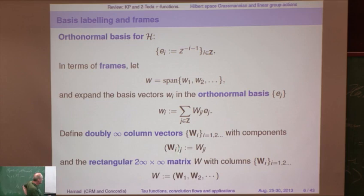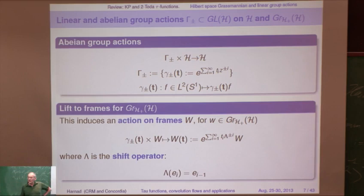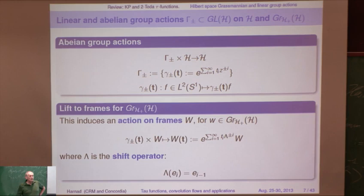If you're familiar with Grassmannians, you'll recognize these as homogeneous coordinates for an infinite Grassmannian. Now we introduce some canonical group actions, because the KP hierarchy will be an integrable hierarchy — we can expect there's going to be an abelian group acting which is in some sense maximal. The Grassmannian and the group action is canonical. It's given once and for all, and every solution — all the things we've been seeing — are special cases of flows, orbits of this group. The only difference is what is the initial point.